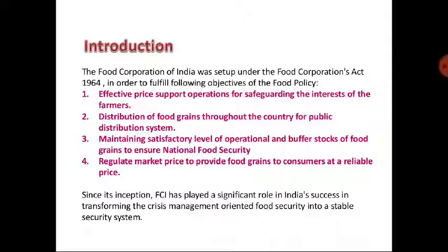The FCI purchases excess crops from the farmers and distributes them to citizens under the Public Distribution System through fair price shops, under APL and BPL ration cards. The next objective is the distribution of food grains throughout the country for the public distribution system — distributing basic food grains necessary for public utility purposes.